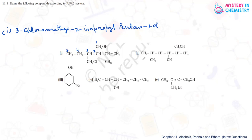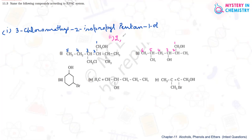Now come to the second compound. It is hexane: 1-2-3-4-5-6. Hexane is the longest chain, and we number it so that the carbon containing the OH group gets the least number. At the second and fifth positions, methyl groups are present, so it is 2,5-dimethyl.